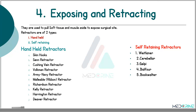The fourth classification of surgical instruments is exposing and retracting. These instruments are used to pull soft tissues and muscles aside to expose the surgical site for easier operation. These retractors are of two types: handheld retractors and self-retaining retractors.